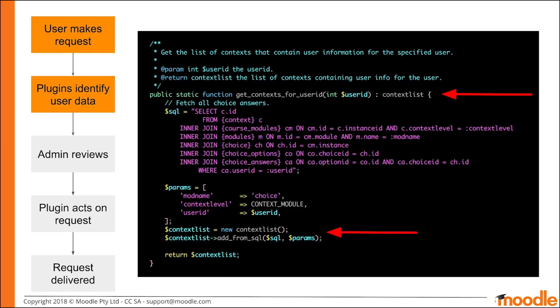Although your plugin may have more granular information about where a user has data, the context is the smallest piece of shared information that can be universally used across Moodle. Your plugin must identify each context where the specified user has any data. We do this using SQL rather than a set of API calls to try and avoid heavy processing in order to retrieve context information.